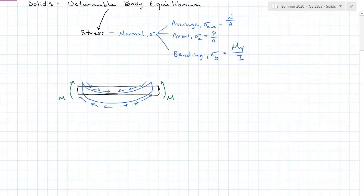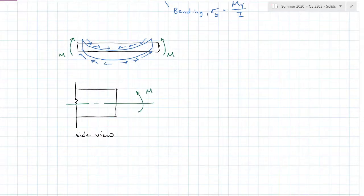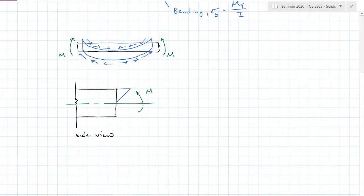We can show that stress distribution on a rectangular cross section. The centroidal axis of that cross section is going to be in the middle, drawn as a green line. If I apply positive moment, which is compression in the top, my stress distribution is going to be triangular in shape, with tension in the bottom and compression in the top.